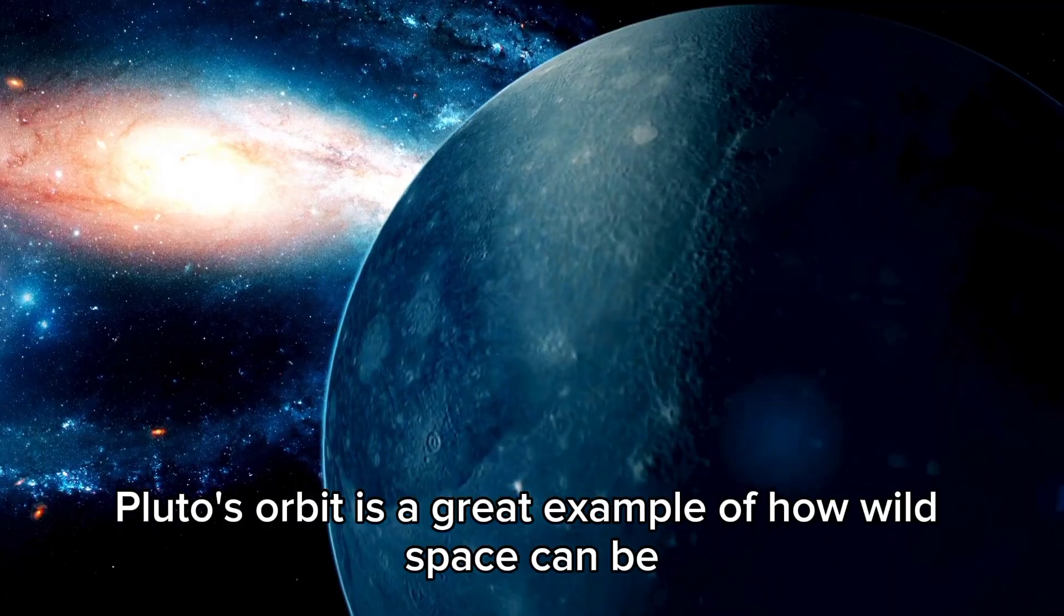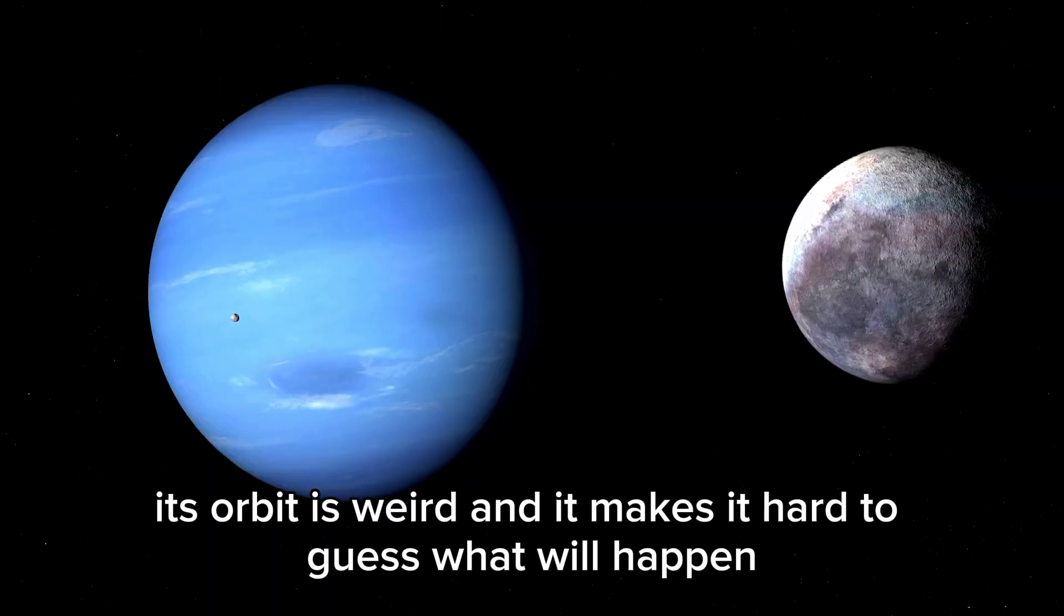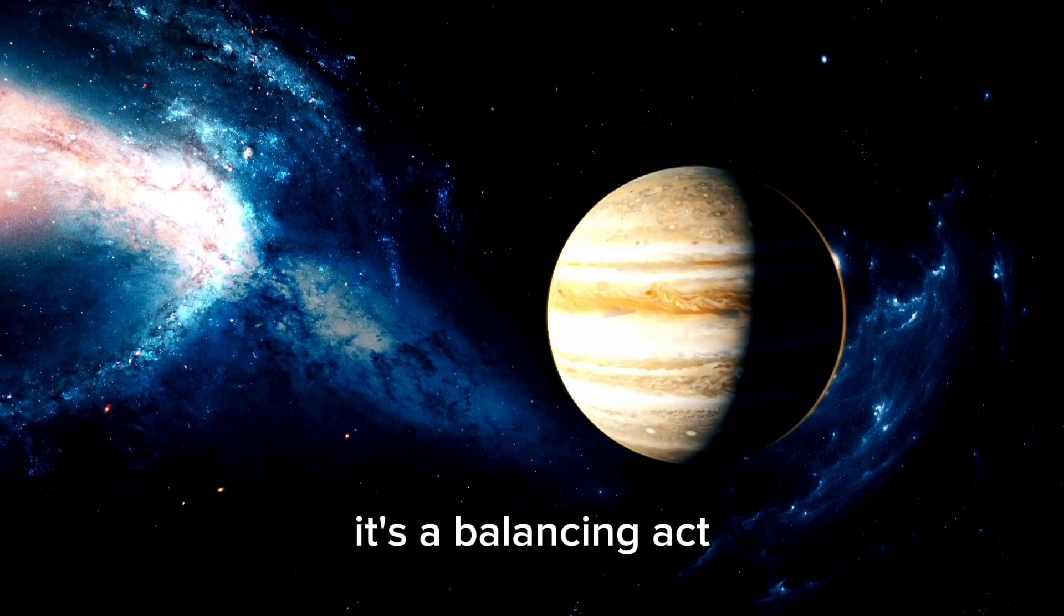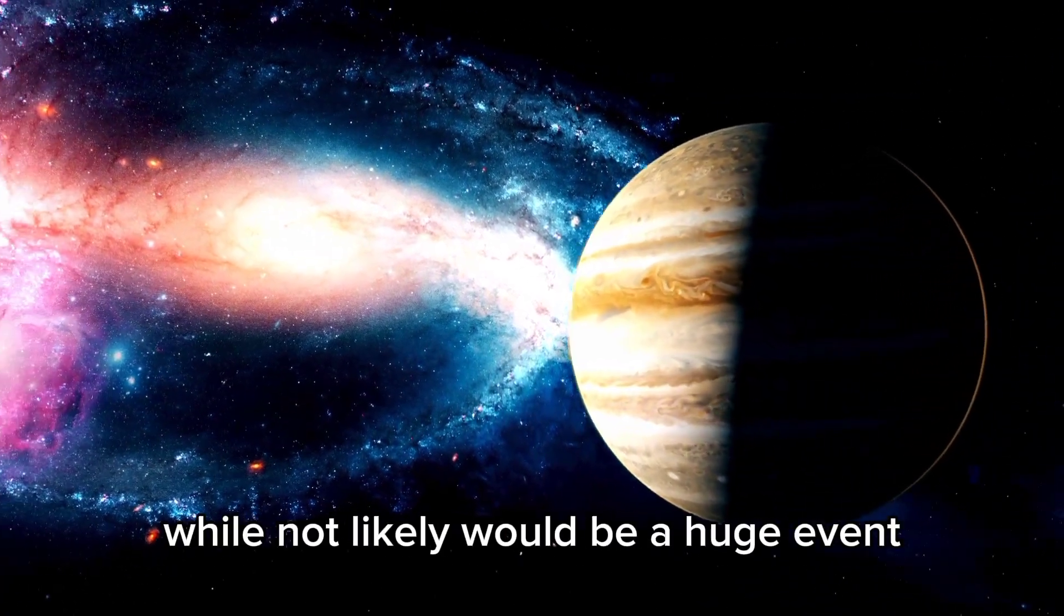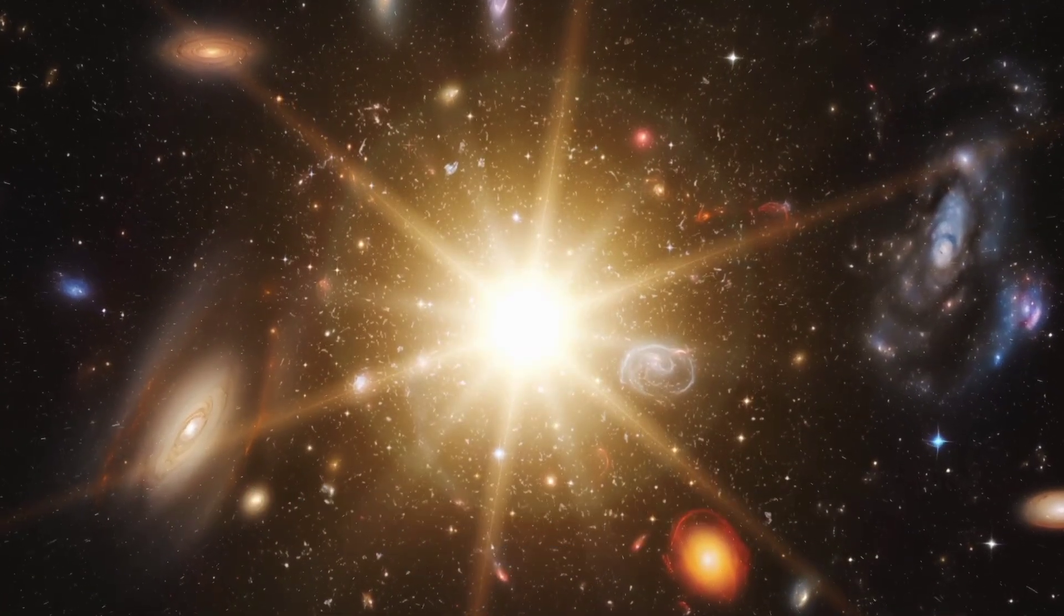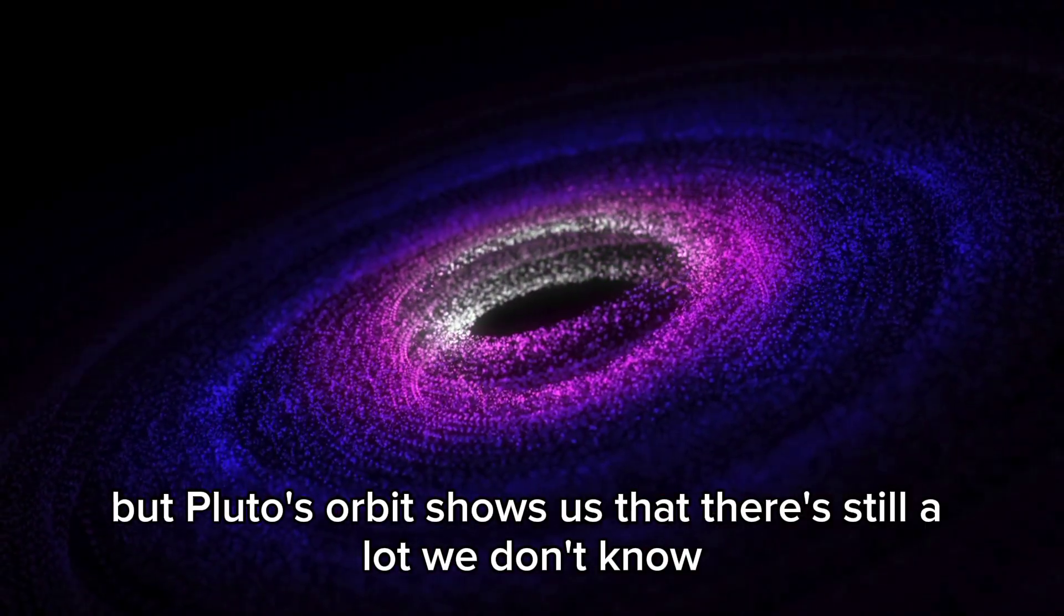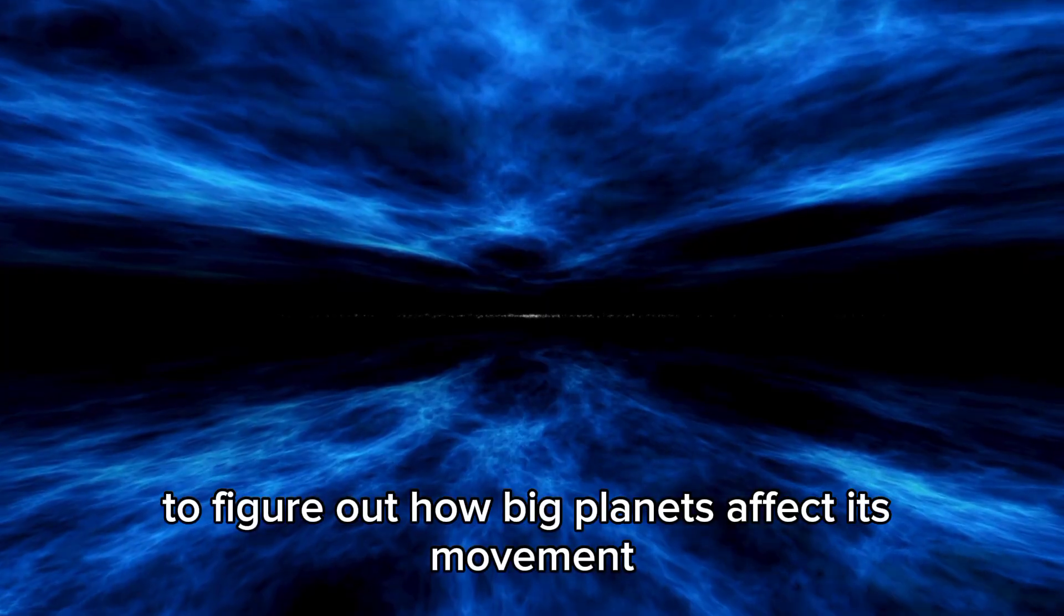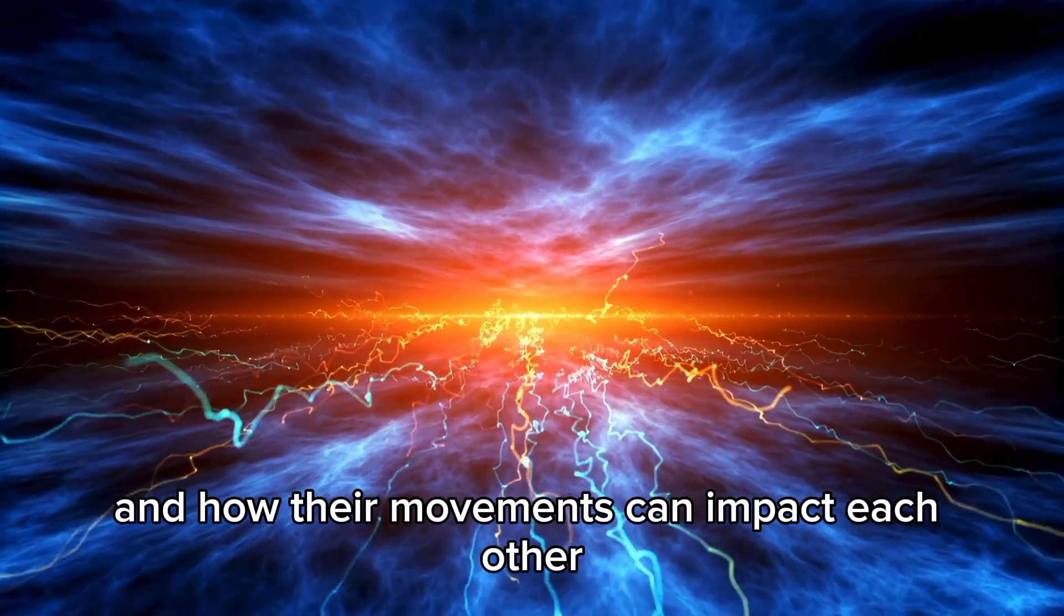Pluto's orbit is a great example of how wild space can be. Its orbit is weird, and it makes it hard to guess what will happen. But gravity keeps Pluto and Neptune apart most of the time. It's a balancing act. A crash between Pluto and Neptune, while not likely, would be a huge event. It would change how we understand the solar system. Space watching has come a long way, but Pluto's orbit shows us that there's still a lot we don't know. Scientists keep studying Pluto's path to figure out how big planets affect its movement. This is important to figure out how everything in space is connected and how their movements can impact each other.